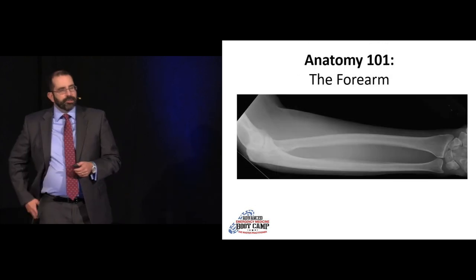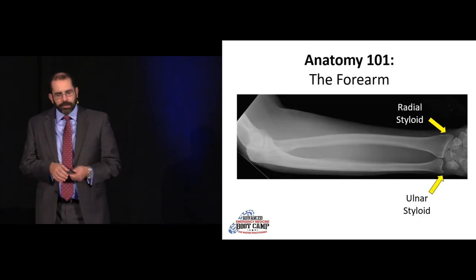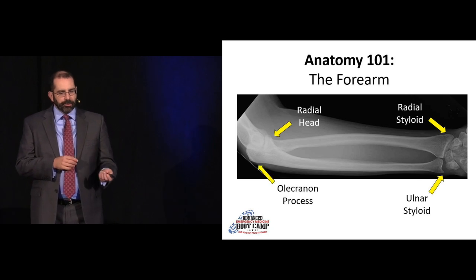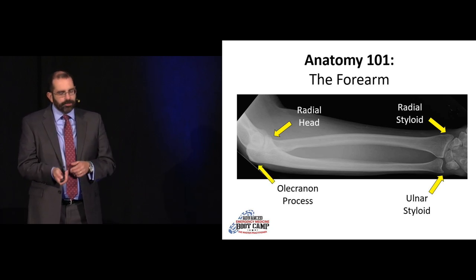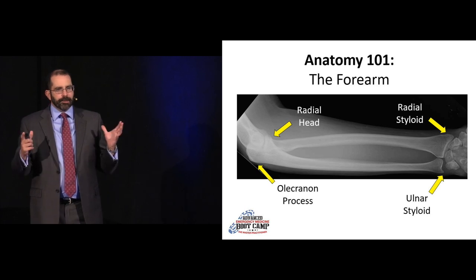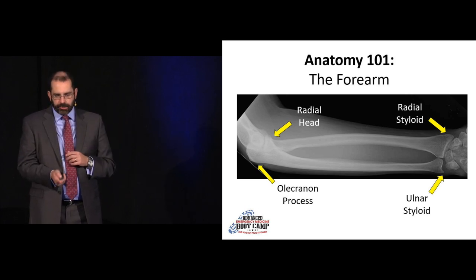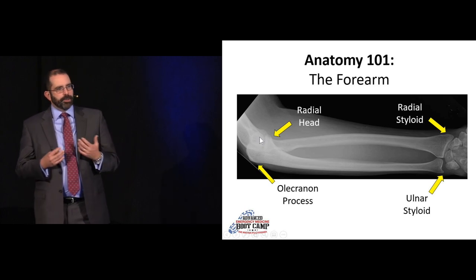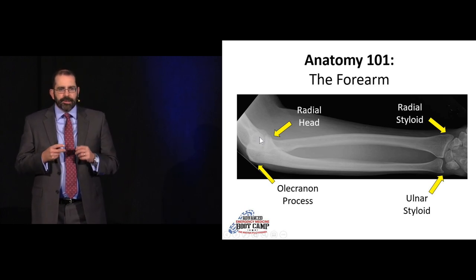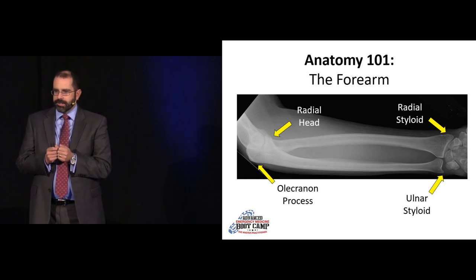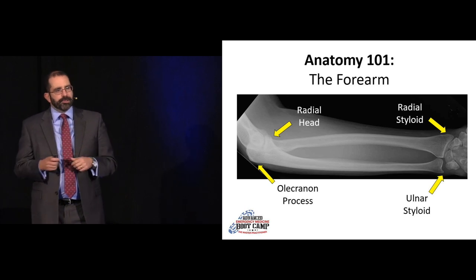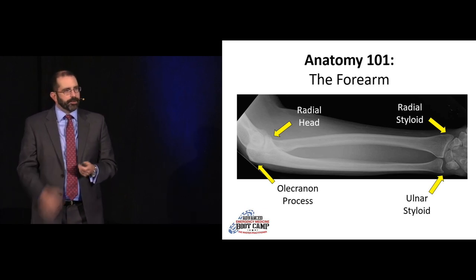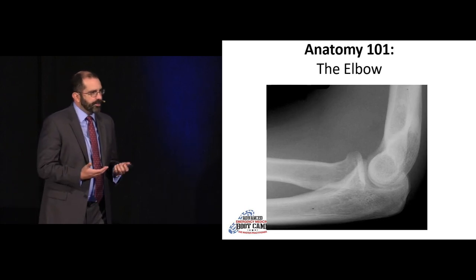Moving into the forearm: you have your radial styloid, ulnar styloid, radial head, and olecranon. The forearm forms a ring structure — it's joined at both ends with your distal radial-ulnar joint and your radial head. That concept is very important. It's a ring structure, and it's really hard to break a ring in just one place. Think of trying to snap a Lifesaver — that's going to have implications for patterns of injury.